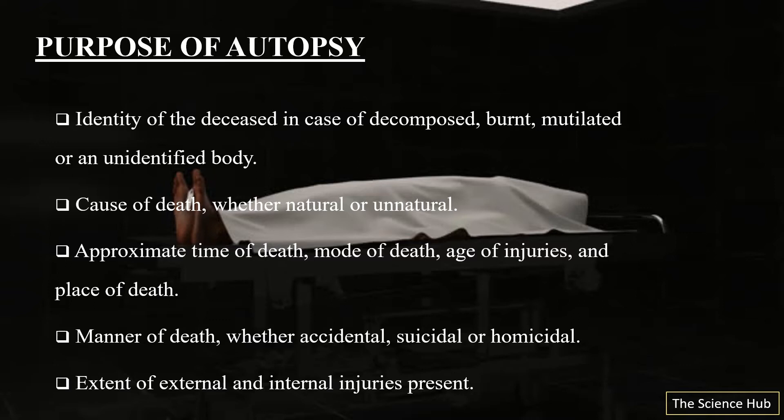Then, to know about the cause of death — whether it is natural or unnatural. We can approximate the time of death, manner of death, then the age of injuries, and the place where the death took place. The manner of death — whether accidental, suicidal, or homicidal — and the extent of external and internal injuries present on the body.